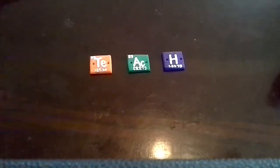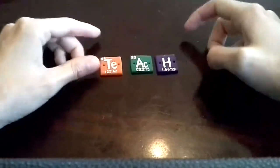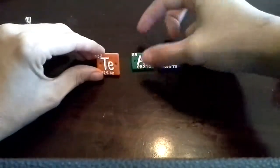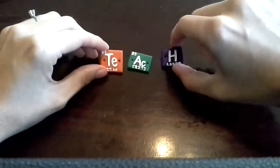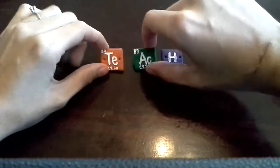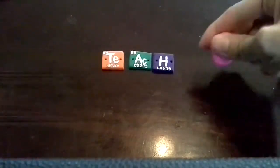So here we have some tiles that I made using the periodic table to spell out the word teach. The T-E, A-C, and the H. And I just cut out some squares from polymer clay and I'll show you how I did that right now.